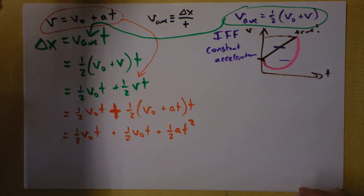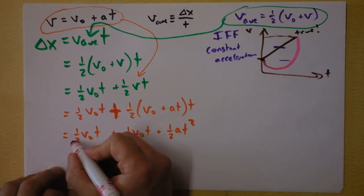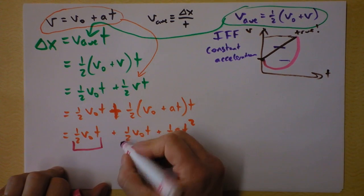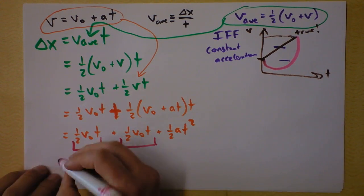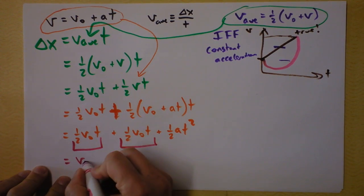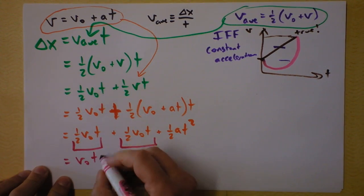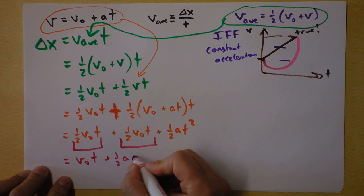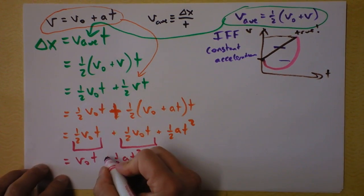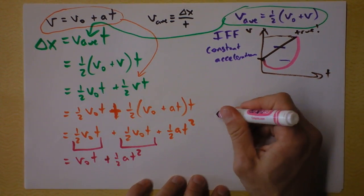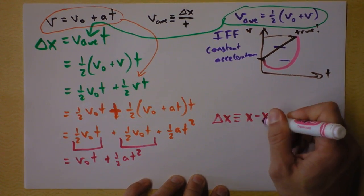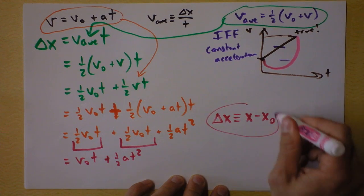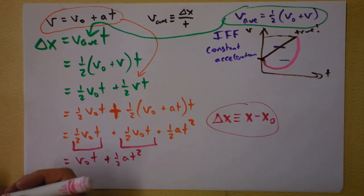I notice that this is half of an apple and that is half of an apple, and if you've got two halves of an apple, you've got an apple. So we get v-naught times t plus one-half acceleration times t squared. The final observation is that delta x means x minus x-naught. We can take this and rearrange it just a little bit to find the classic.